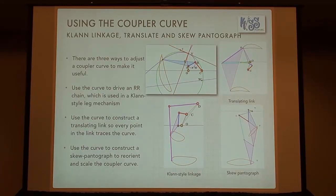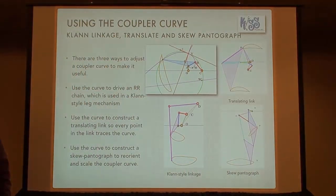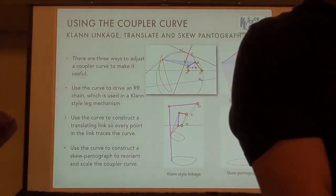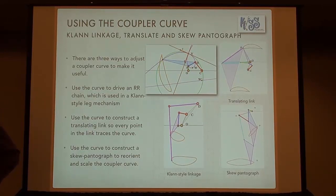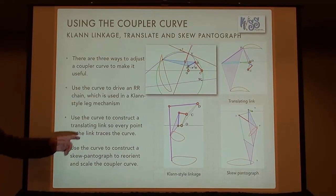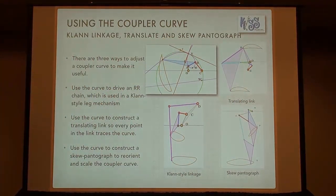So this is my daughter's artwork. We actually started off with a logo that used KISS as the model, but then we got a little bit crazy. There's a four-bar linkage in there — the 'I' is this four-bar linkage. So once you have the coupler curve shape you want, and if it's not positioned relative to the linkage in a useful way, there are three ways you can reposition the coupler curve.